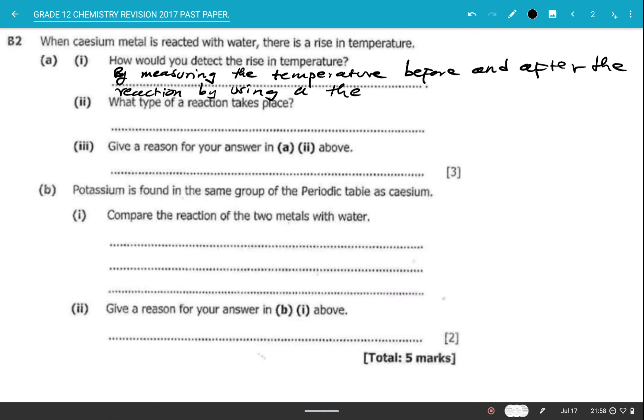Bear with me, my handwriting is not that smooth because of the pen I'm using to write on the screen. So by measuring the temperature before and after the reaction by using a thermometer. Now it's saying what type of reaction takes place. This reaction is causing the rise in temperature.